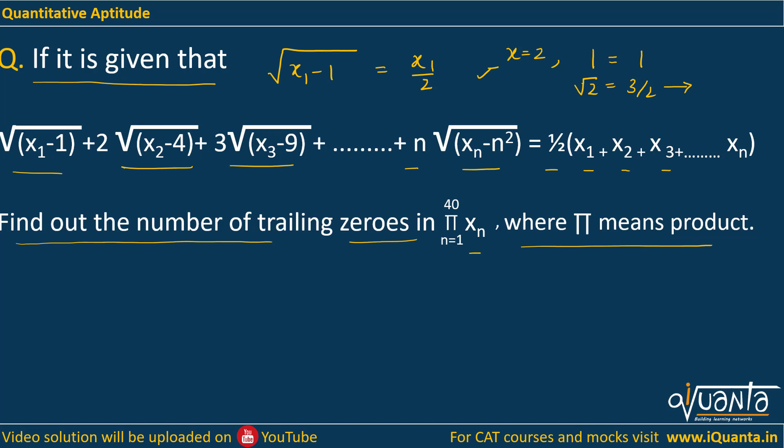Since we can see here that we are getting an irrational number in the LHS and a rational number in the RHS, we will assume there is a specific set of values satisfying this equation. So there is only one way left in which we will have to compare each term of LHS with each term of RHS. We will be comparing the x₁ term in the LHS to x₁ term in RHS.